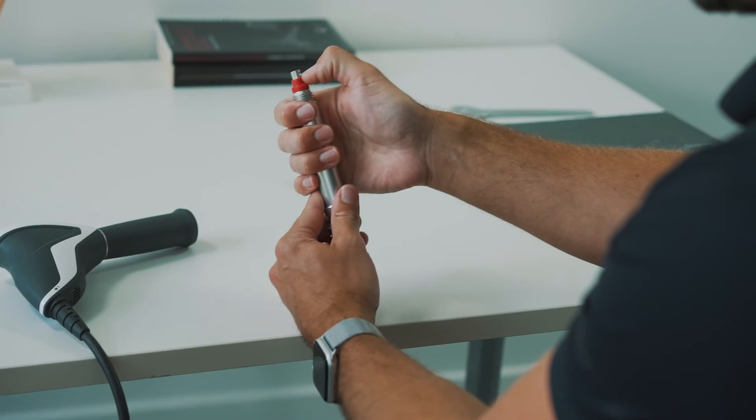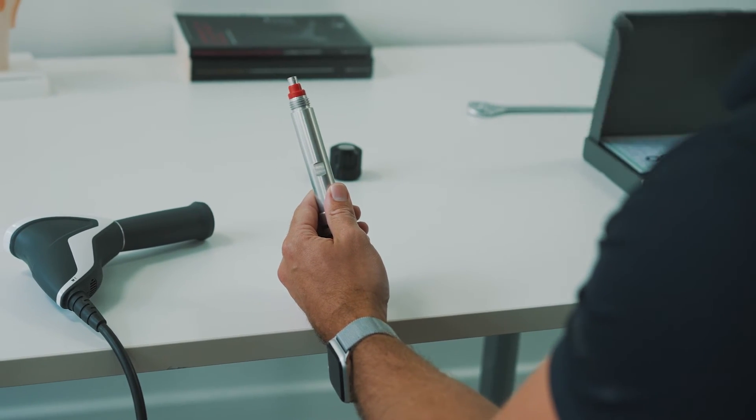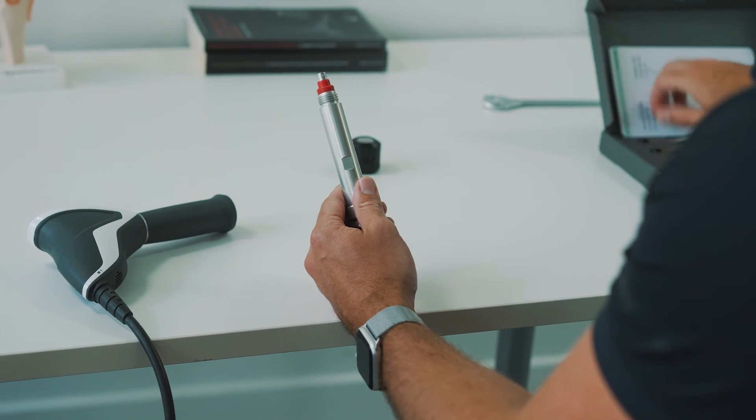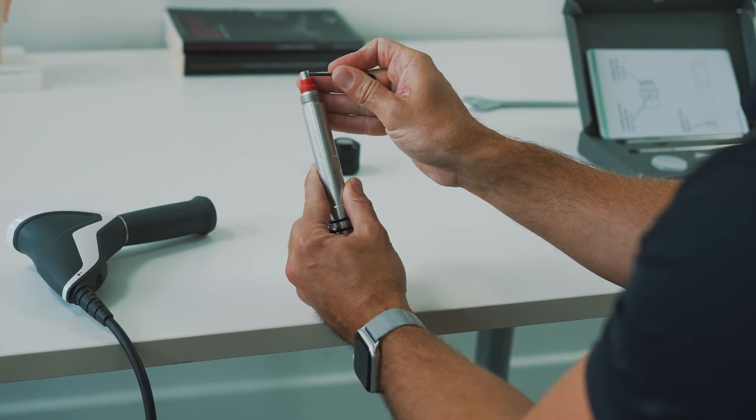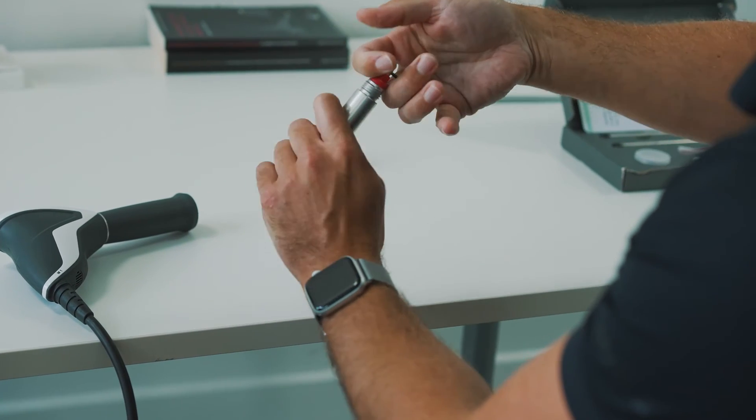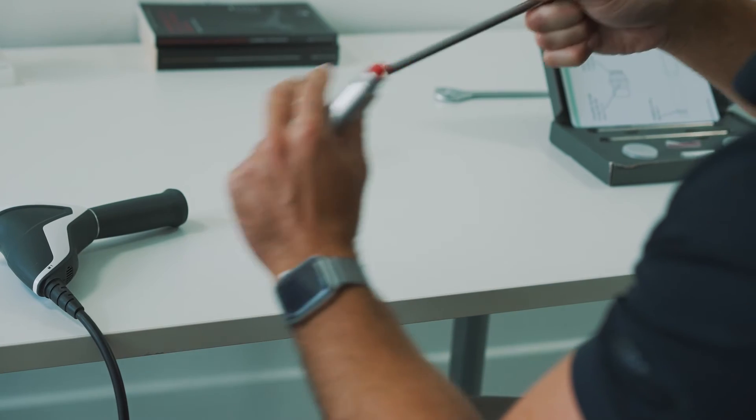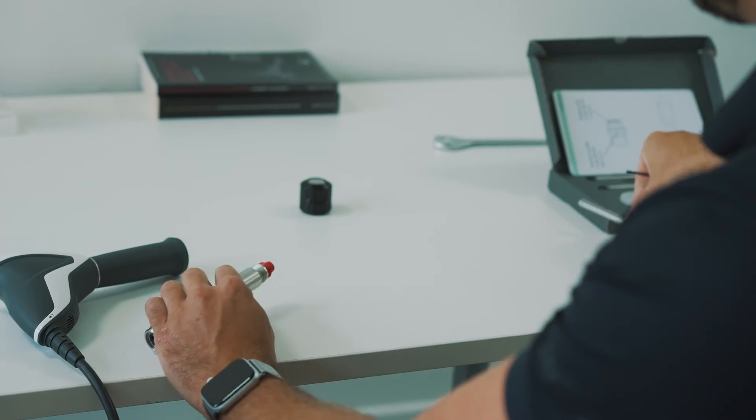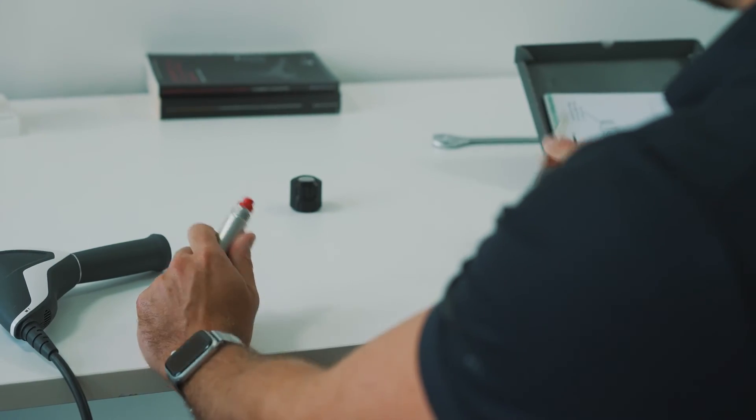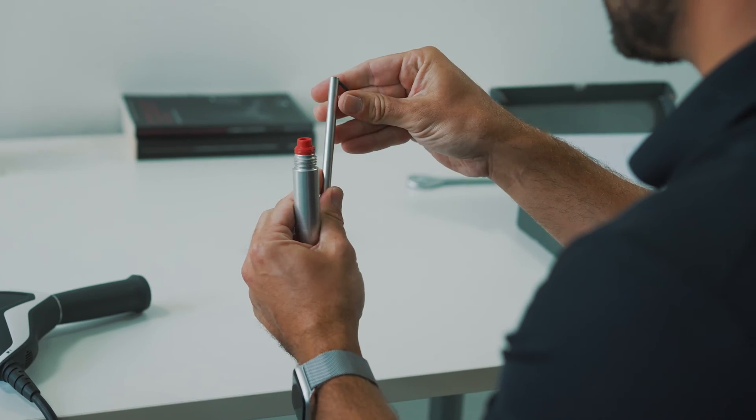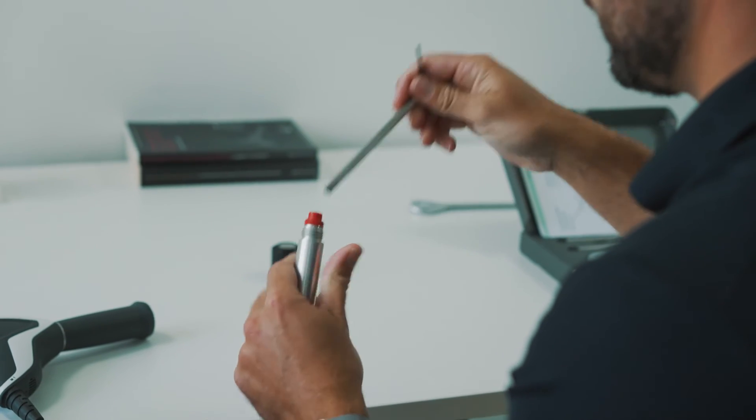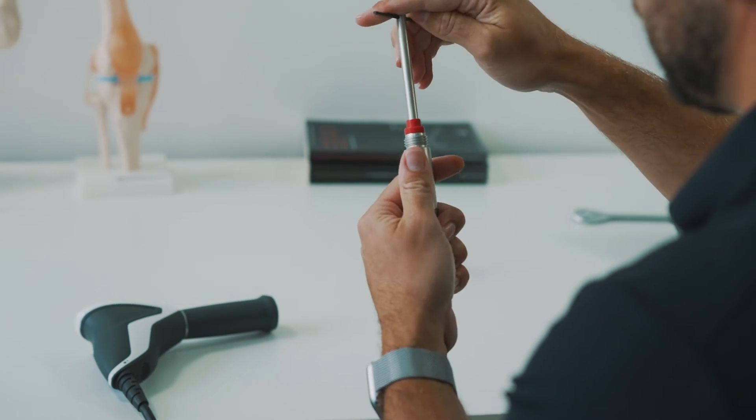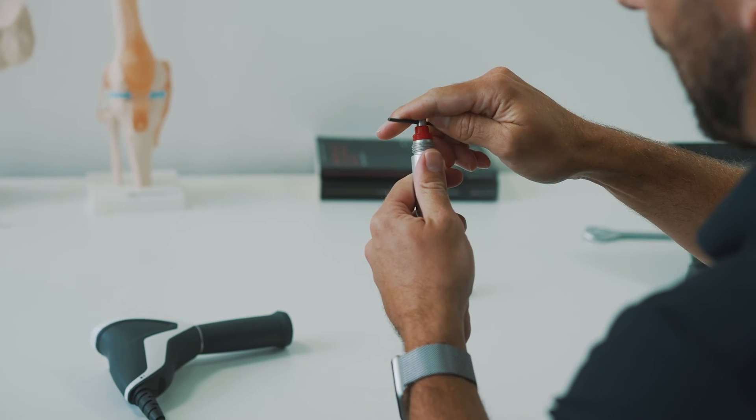To change the guide tube on the barrel, use the allen key to remove the guide tube. Insert the allen key through the hole and using a pulling and twisting motion, remove the old guide tube. Using your new guide tube, insert the allen key through the holes and then push the guide tube into the barrel, ensuring it's pushed all the way down.